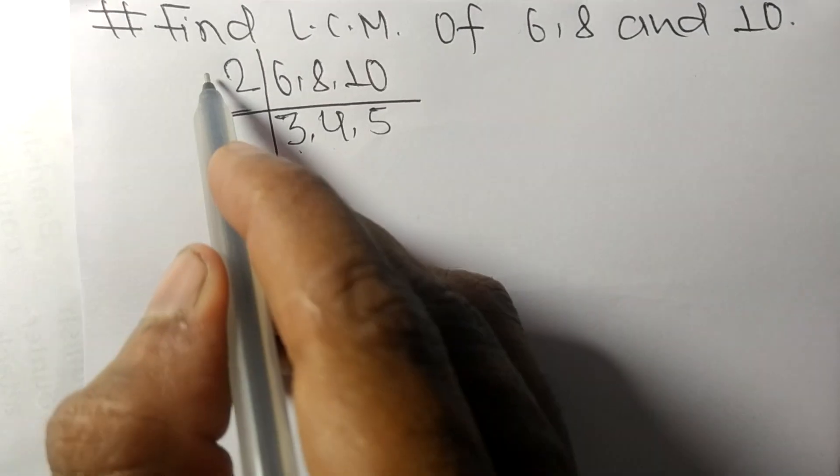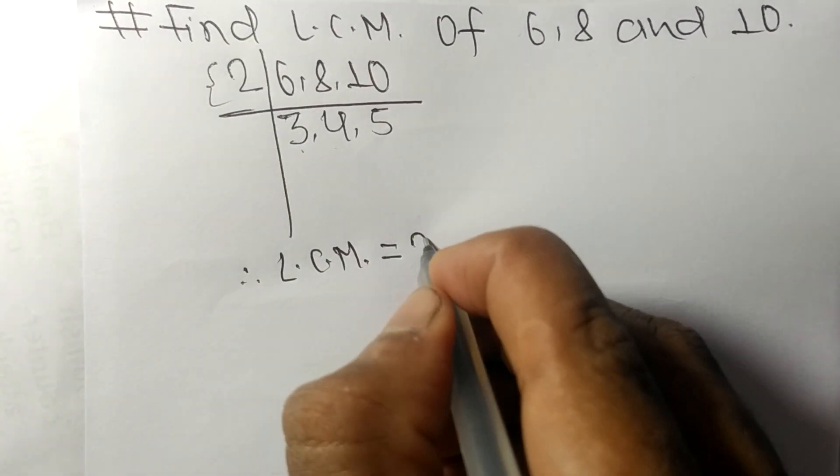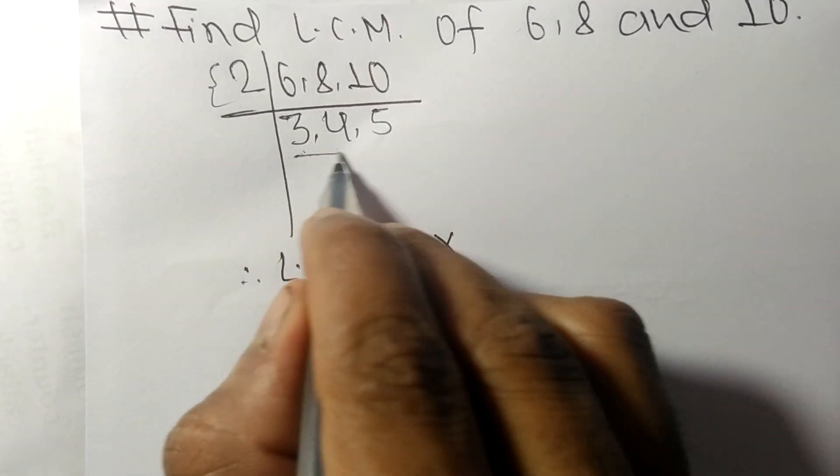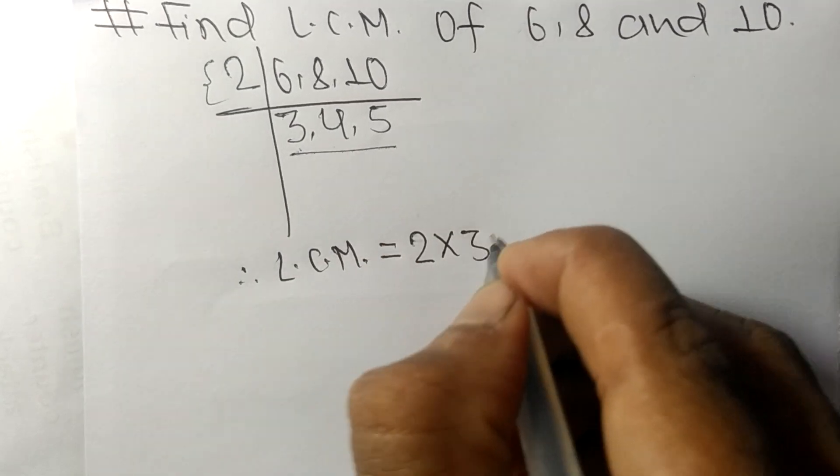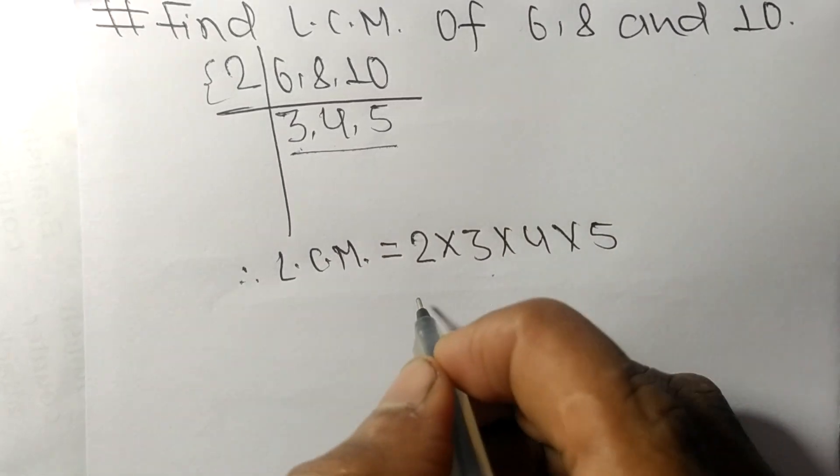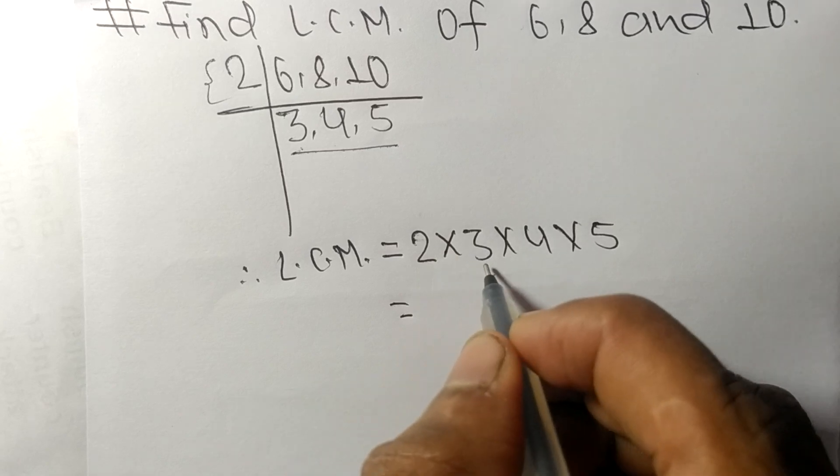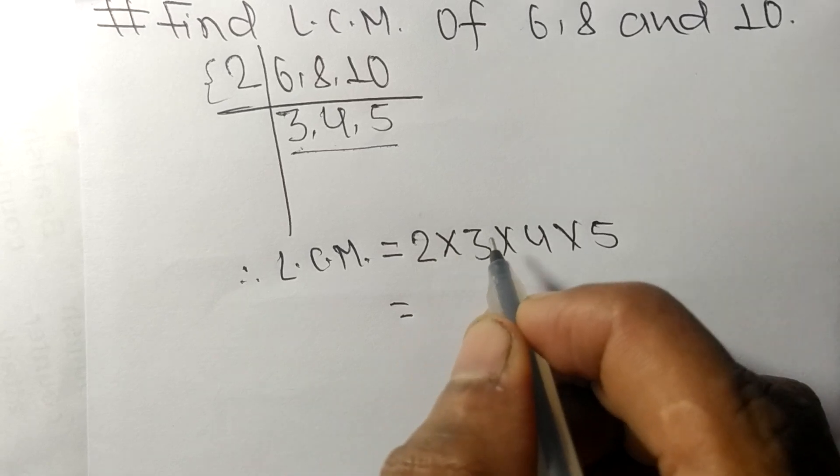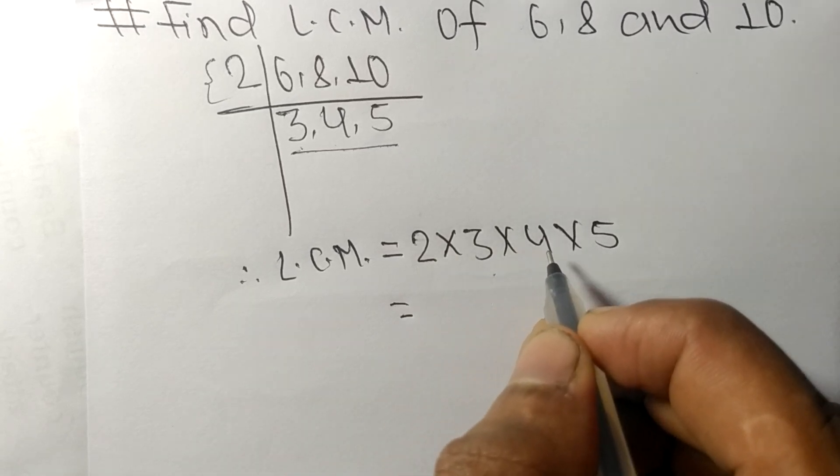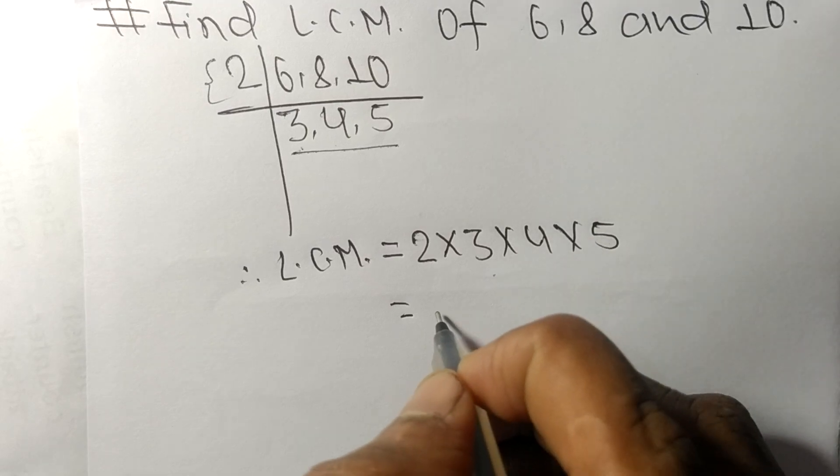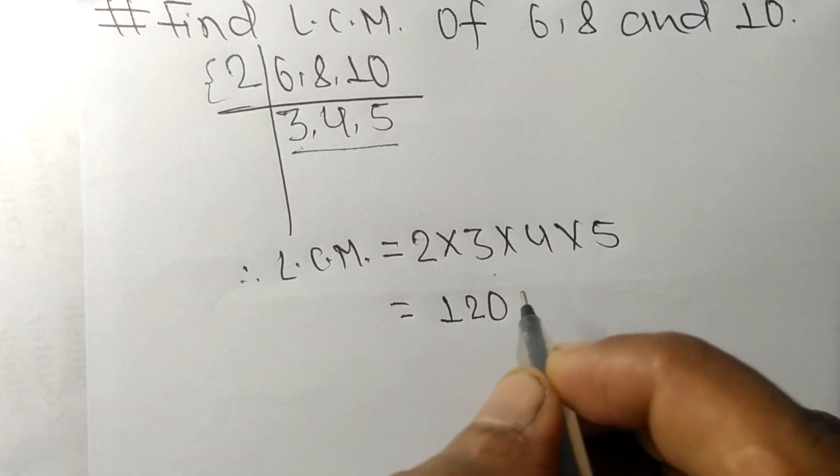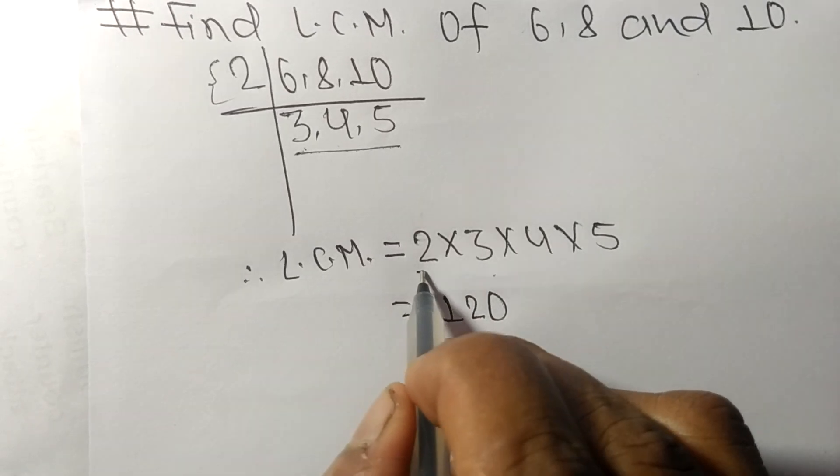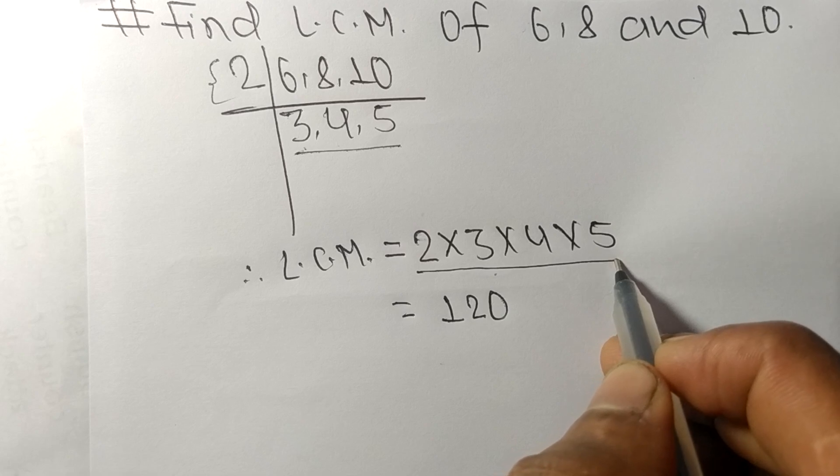Equal to, from this side it is 2, from here we get 3, 4, and 5. So 2 times 3 means 6, 6 times 4 means 24, 24 times 5 means 120. So by multiplying all these numbers we get 120.